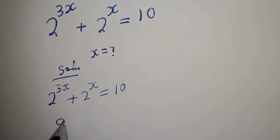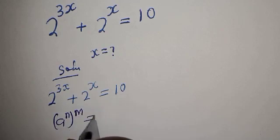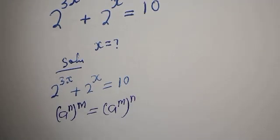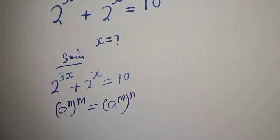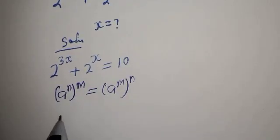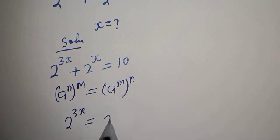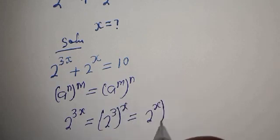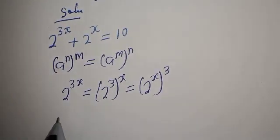If you have a raised to power n to the power of m, this is equal to a raised to power m to the power of n. And 2 raised to power 3x is equal to 2 raised to power x to the power of 3, which is equal to 2 raised to power x to the power of 3x. Now let's replace.